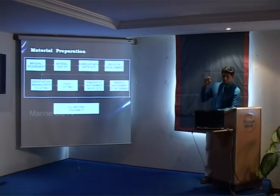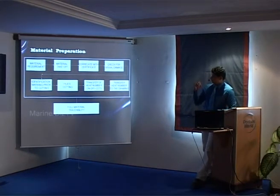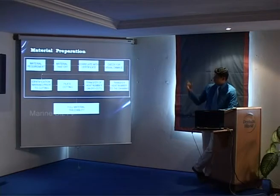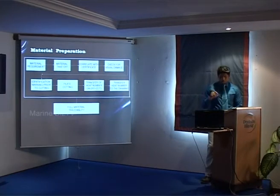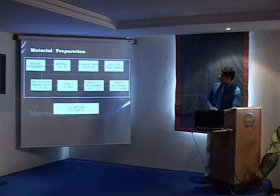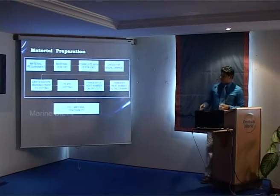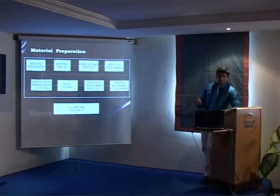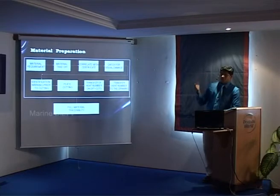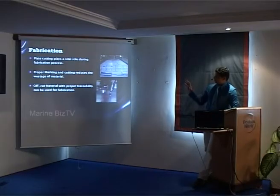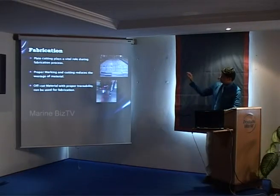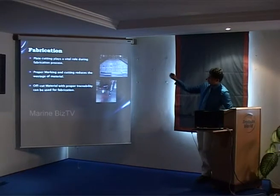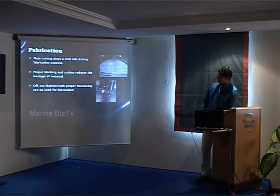Once you have the right drawing and have analysed what material you need, it comes to material preparation — how you identify the material and get it from purchase. You need to correlate from the purchase department the materials received according to the Mill certificate, and do a visual check on the plate to ensure there is no visual damage. Whenever you take an off-cut of material, ensure proper identification is on the off-cut and transfer all heat numbers to all off-cuts.